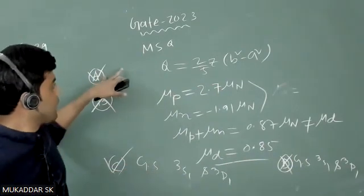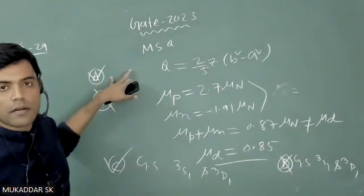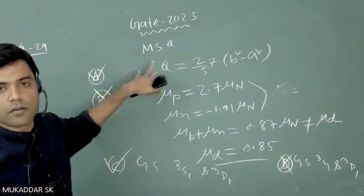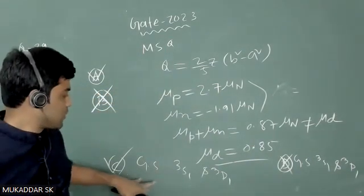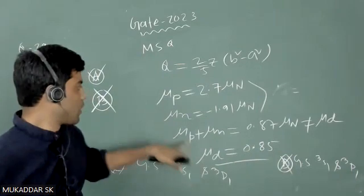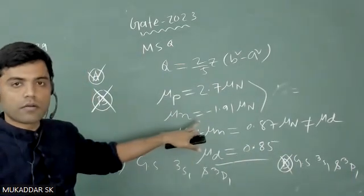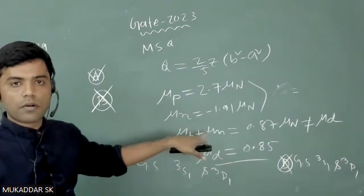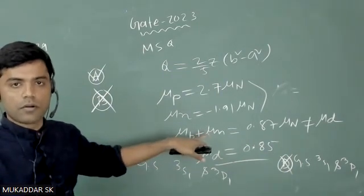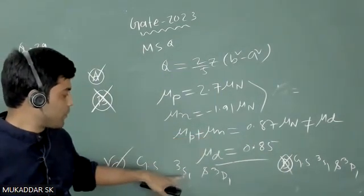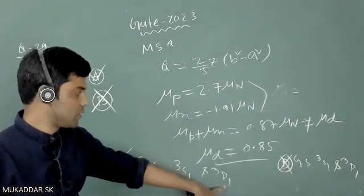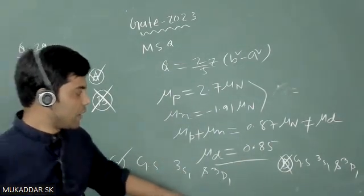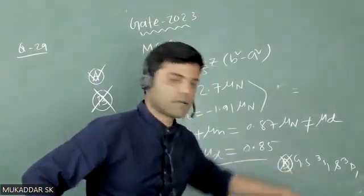So option C and option A are correct. The quadrupole moment is finite because of non-spherical distribution, and the ground state is a mixture of 3S₁ and 3D₁. However, the magnetic moment of a deuteron cannot be the sum of the magnetic moment of proton and neutron because of the presence of these two states. And the ground state is not like option D. Thank you.